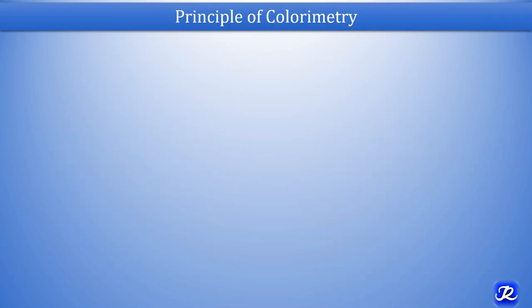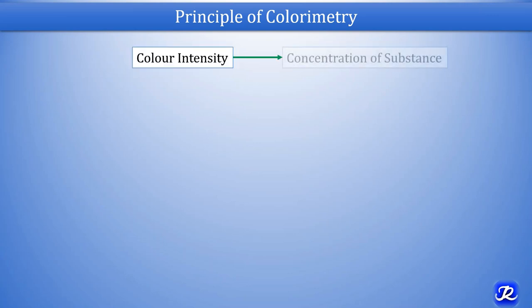Now let us talk about the principle of colorimetry. Colorimetry is the measurement of color. The concentration of a substance is directly proportional to color intensity. The principle of colorimetry and the relationship between color intensity and concentration is shown by two laws: Beer's law and Lambert's law.